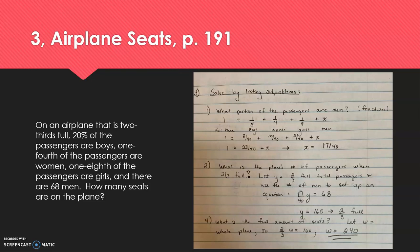So I went and solved that equation that I've set up on the screen there for X, which is the portion or percent or fraction of men. And we find out that right now the men are comprising 17/40ths of all the passengers that are on that two-thirds full plane.